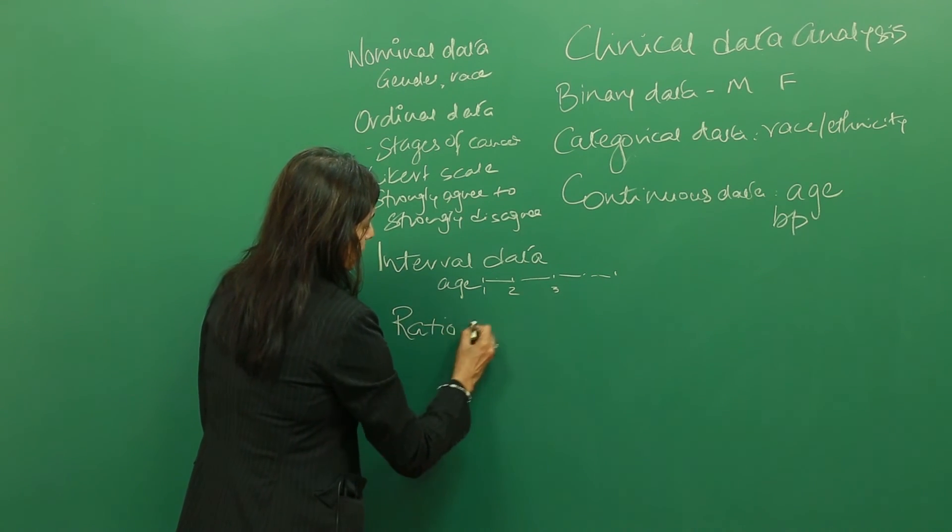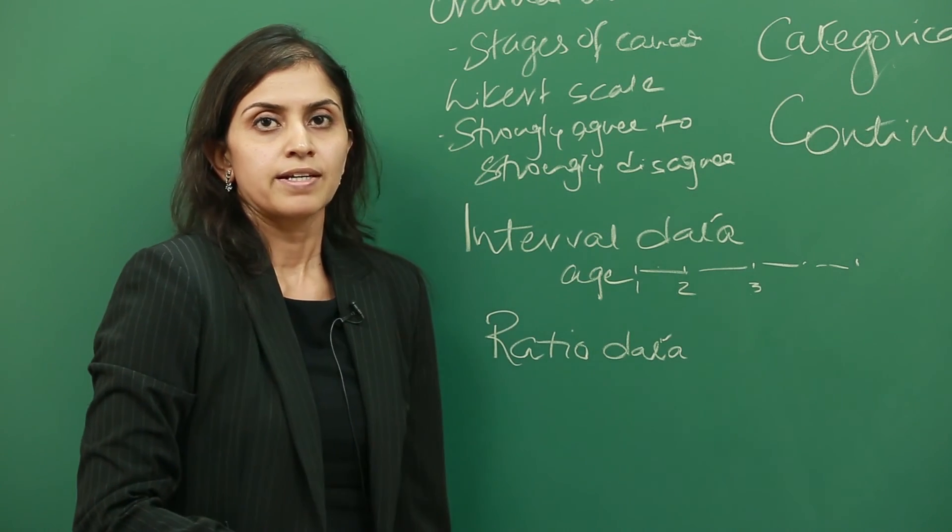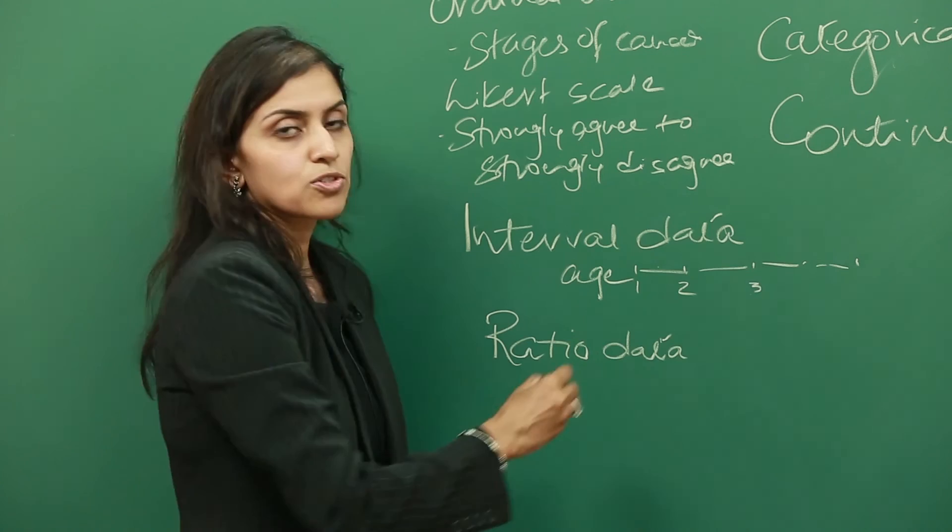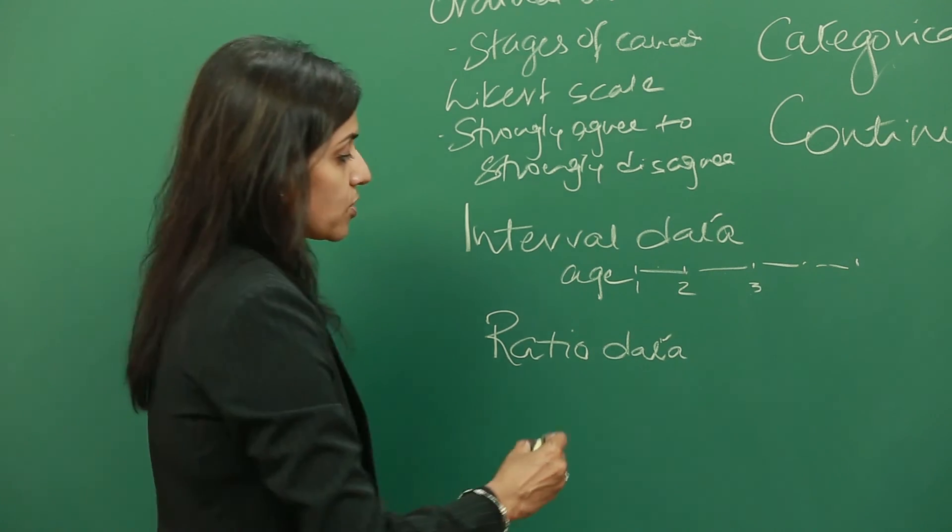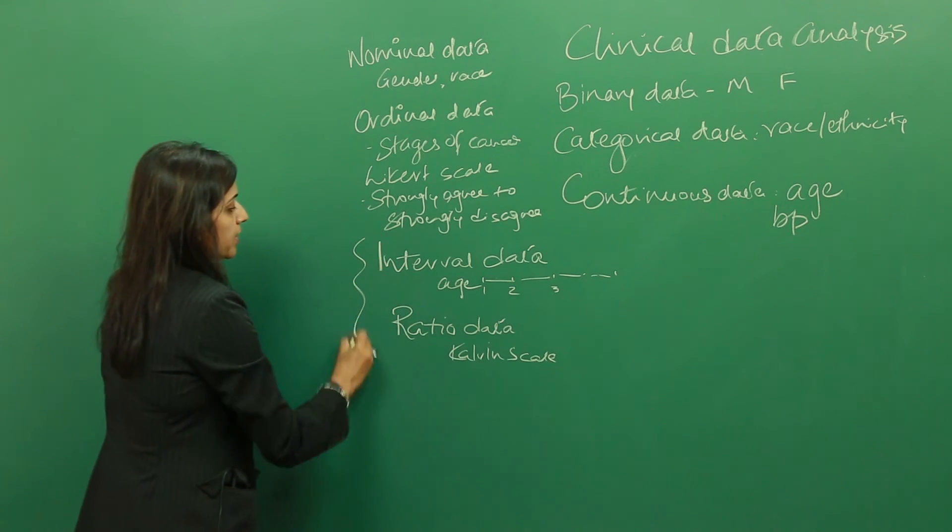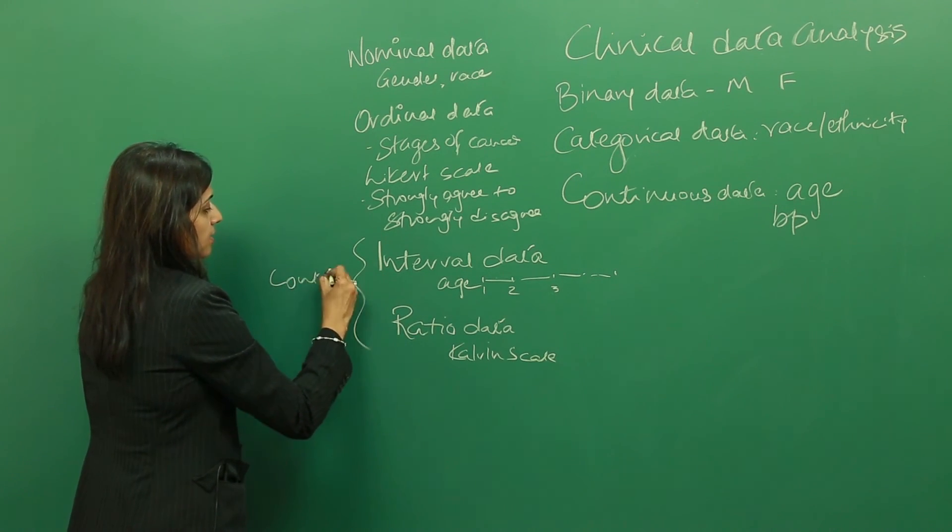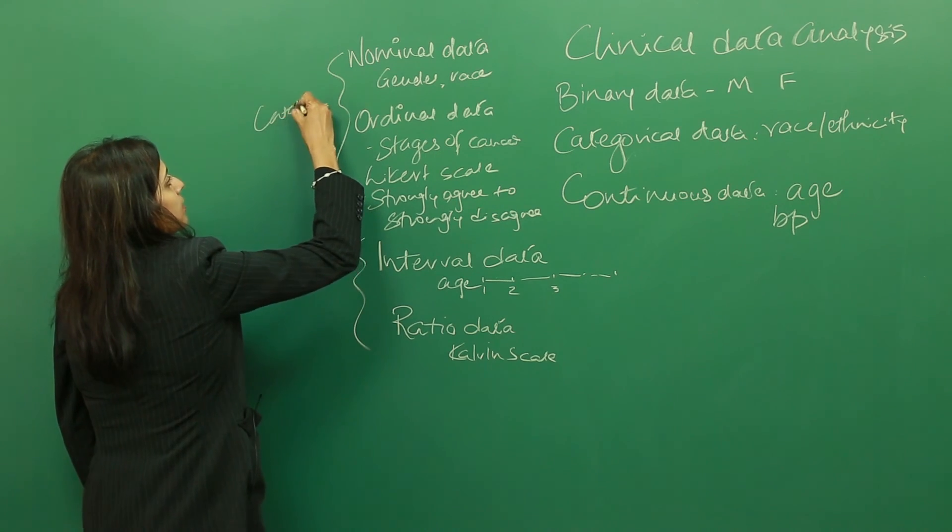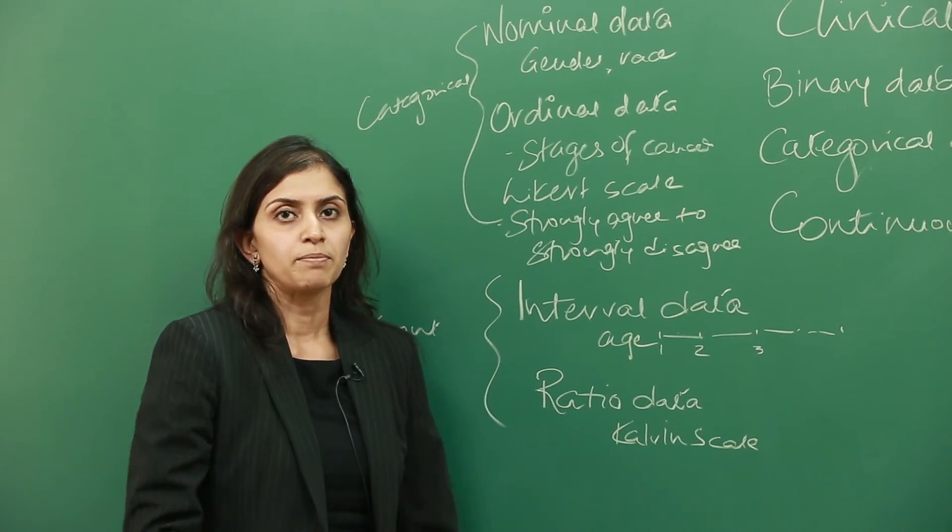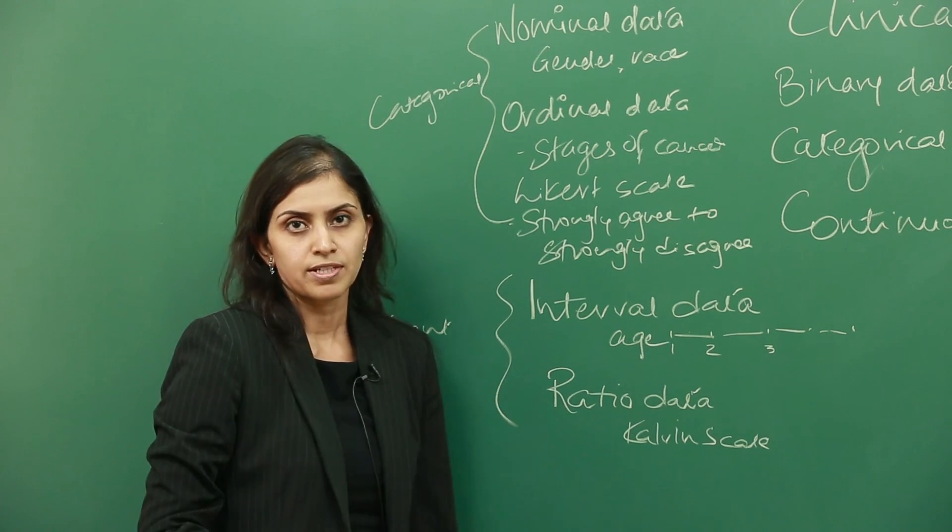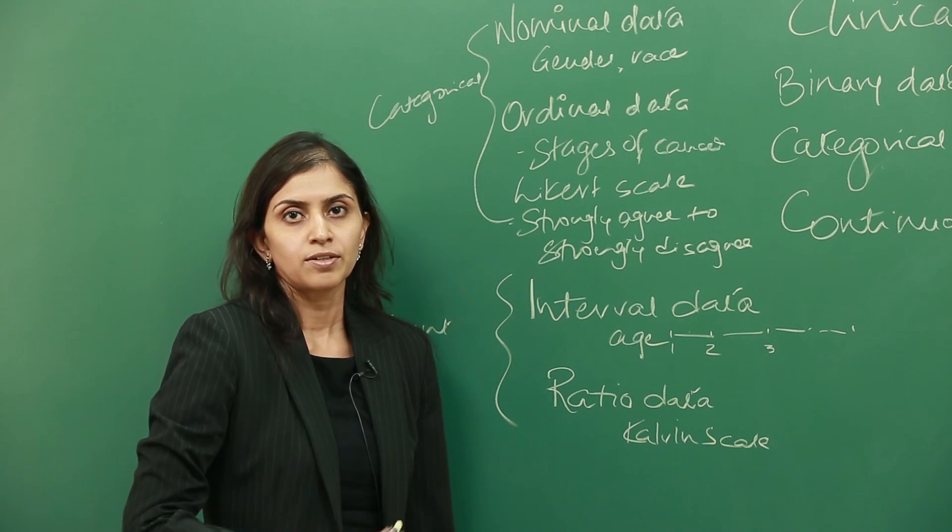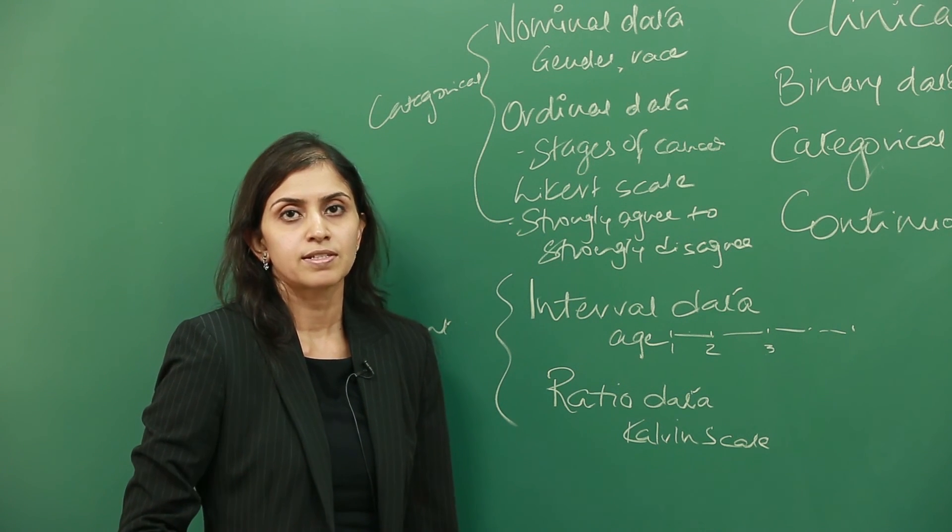The last kind of data is known as ratio data. Ratio data is a specialized case of interval data, where not only the intervals are meaningful, but also the ratios are meaningful. An example of this would be the Kelvin scale for temperature. Both of these are examples of continuous data, whereas these two are examples of categorical data. Depending upon the study question, you might have a mix of both categorical and continuous data. Keep in mind that different tests have to be used for categorical data versus continuous data when doing statistical tests.